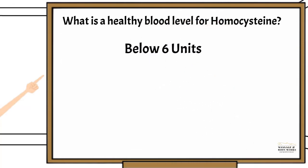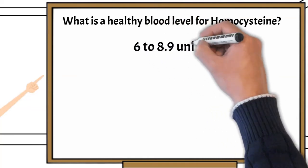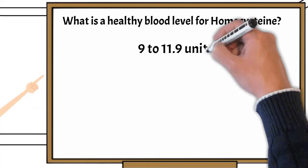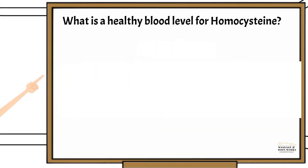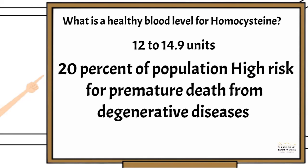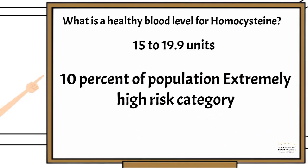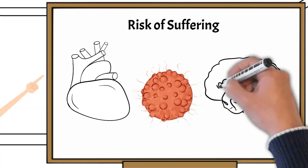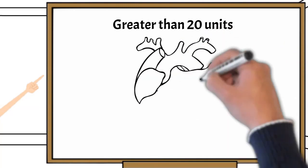Homocysteine level health status: below 6 units, 10% of population, extremely low risk for disease; 6-8.9 units, 35% of population, low risk for disease; 9-11.9 units, 20% of population, significant risk for premature death from degenerative diseases; 12-14.9 units, 20% of population, high risk for premature death from degenerative diseases; 15-19.9 units, 10% of population, extremely high risk category, at risk of suffering a heart attack, stroke, cancer, or Alzheimer's disease in the next 10-30 years; greater than 20 units, extremely high risk right now of heart attack and stroke.